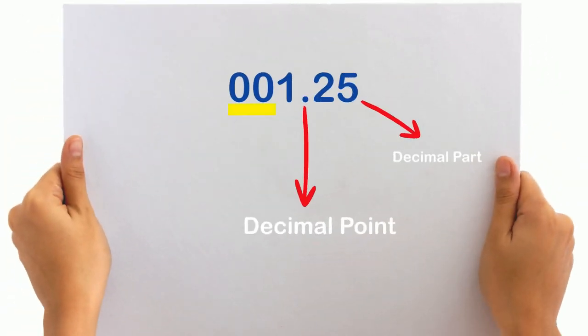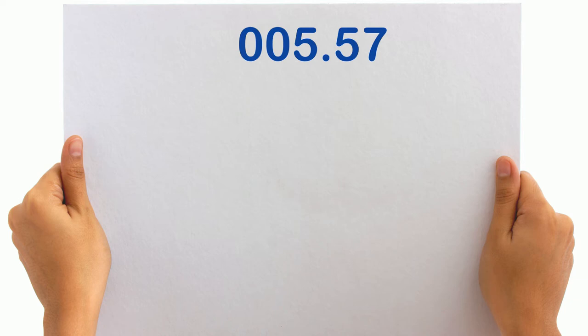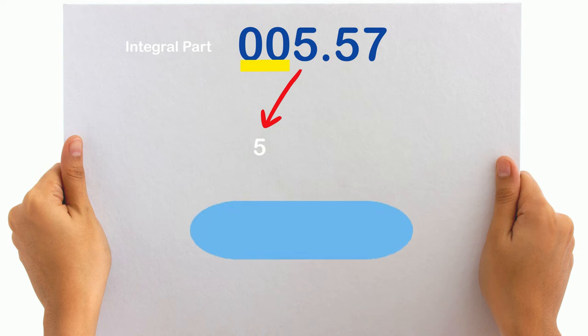Remember that zeros that come in the whole part on the left of the decimal point before a digit have no value. For instance, in 005.57, the two zeros before 5 in the whole part have no value, so we should simply write it as 5.57.